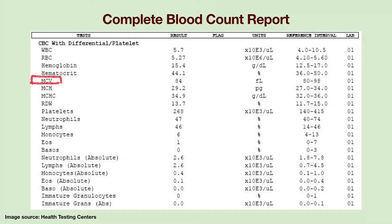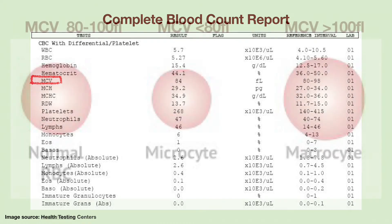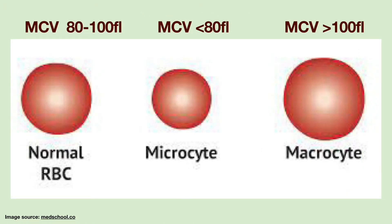The normal MCV range varies slightly from lab to lab. The average MCV ranges from 80 to 100 femtoliters. Red blood cells are called microcytes if their MCV is below 80 femtoliters, and they are called macrocytes if their MCV is above 100 femtoliters.